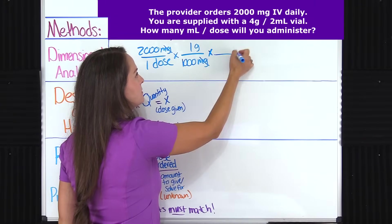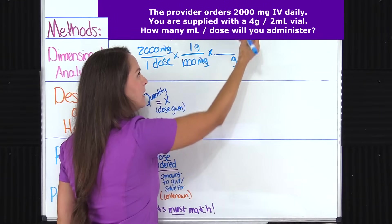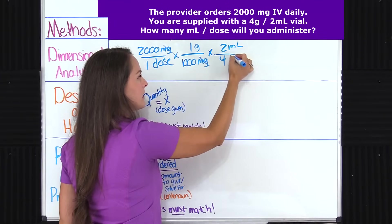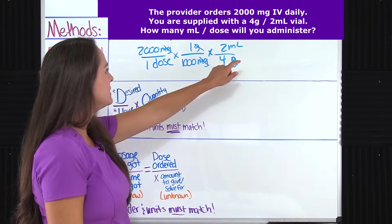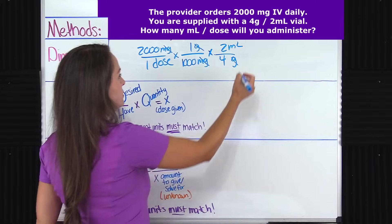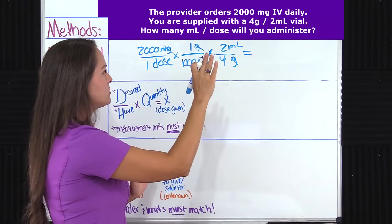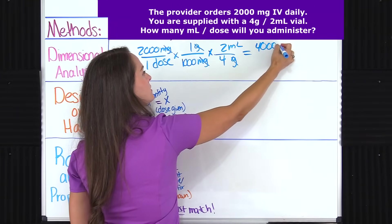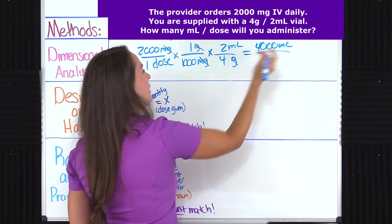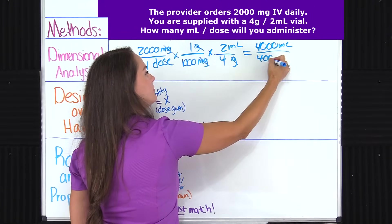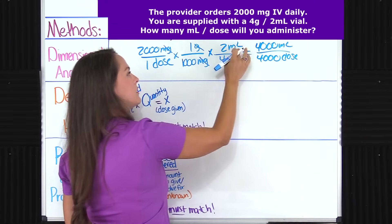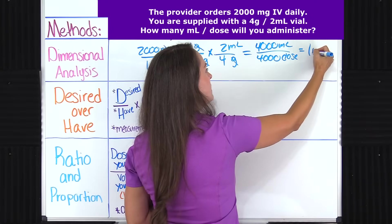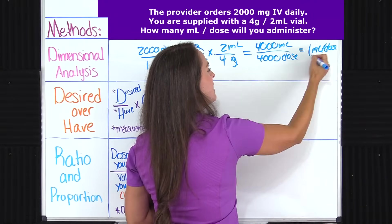We're going to multiply that by this next factor. Pulling your grams over — don't forget to do that — and we know from this vial that four grams is equal to two milliliters. That cancels out grams, and there we are in milliliters per dose. So we're going to multiply everything at the top, everything at the bottom, and then divide. I get 4,000 at the top and 4,000 at the bottom. Dividing that gives us one milliliter per dose. That is our answer.